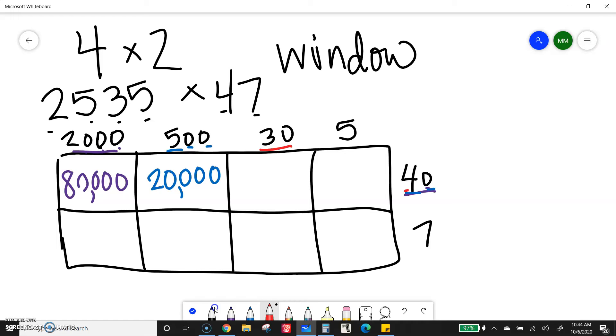And then last but not least, I have 5 times 40, so 5 times 4 is 20, and then put another zero on for that extra zero. I'll go ahead and use my same color.